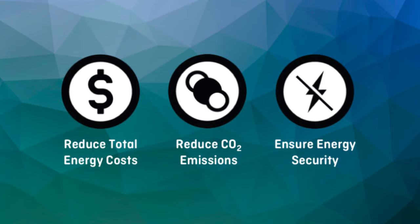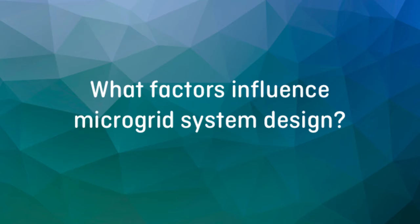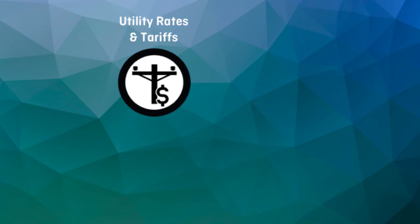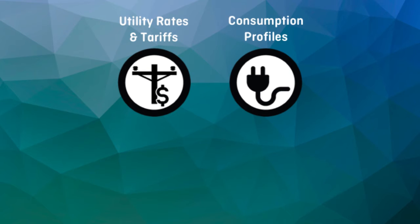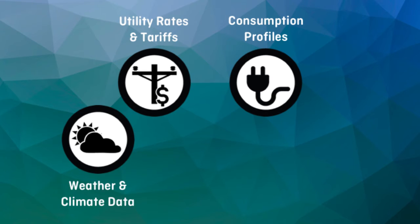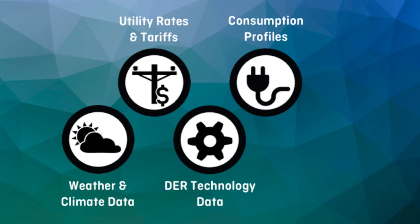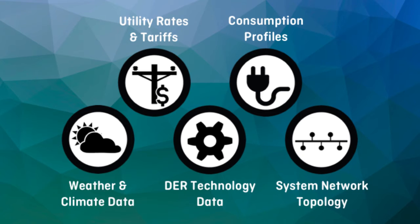It's important to note that for each of these objectives, the optimal system design will vary significantly based on a number of site-specific characteristics. Microgrid designs are often highly customized to their particular application. Important characteristics to consider when designing a microgrid solution include energy rates and tariff structures, energy consumption patterns and load profiles across different end uses like heating, cooling, and direct electricity consumption, local climate and site data that might influence the suitability of different DER technologies, information about the DER technologies themselves which are being considered for deployment, their technical performance characteristics, and capital and O&M costs. And finally, for larger sites such as multi-building campuses, where the placement of distributed resources might impact performance, the topology or structure of the electrical and thermal networks that connect the buildings.